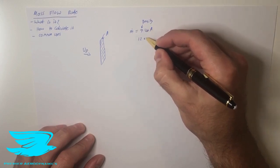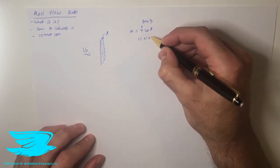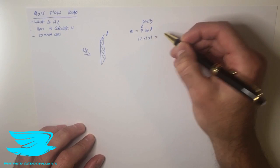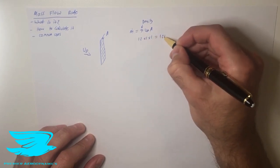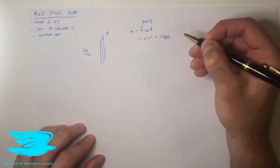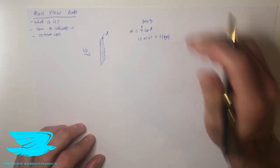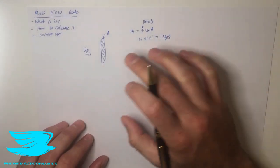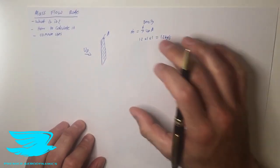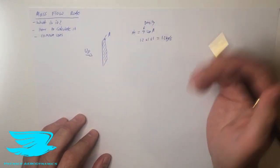If the velocity is 1 meter per second and the area is 1 square meter, the mass flow rate is 1.2 kilograms per second. So that means that every second we have 1.2 kilograms of air going through this face.